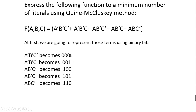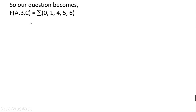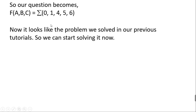Once I'm done representing them in binary, I can write their corresponding decimal representation. The function stays the same ABC, and the values just get changed. We wrote them using sum of products form, but now our question becomes the minterm decimal representation. This should be a familiar form from our previous tutorials.